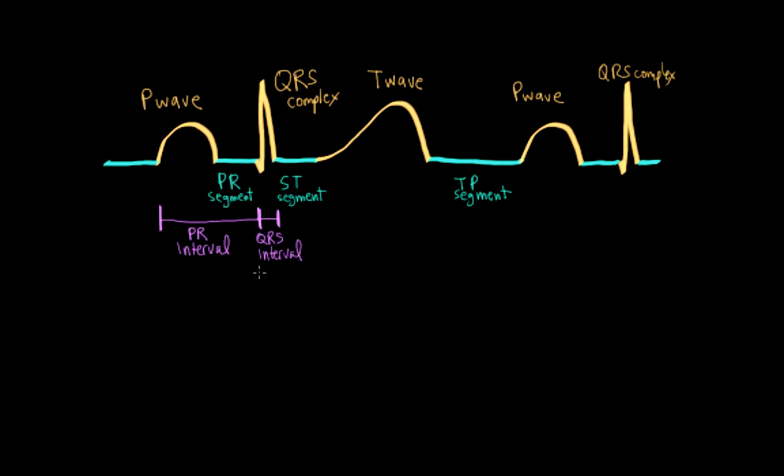Then we have another interval, and it starts at the beginning of the QRS complex or QRS interval. It includes the QRS interval, ST segment, and the T wave. So it ends at the end of the T wave, and we call this interval the QT interval.